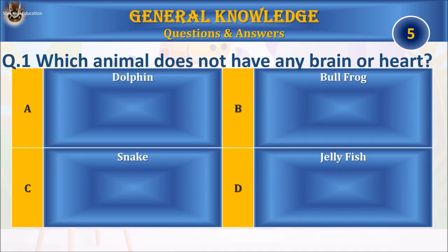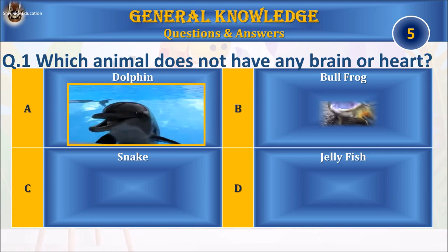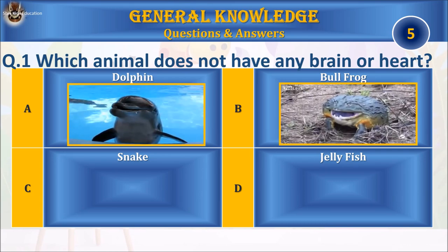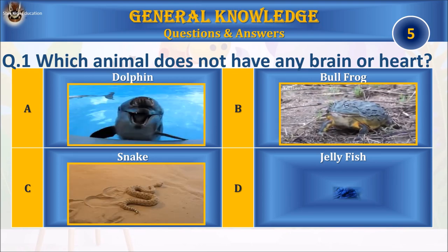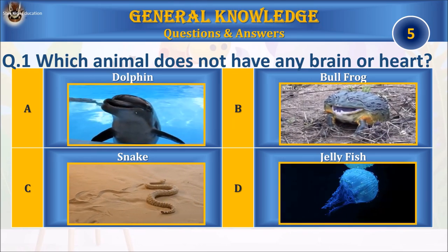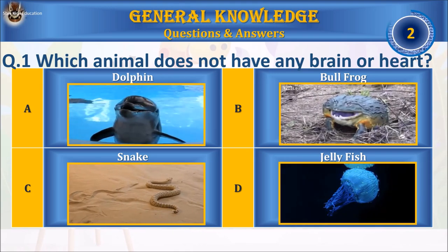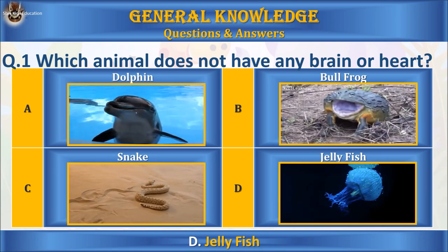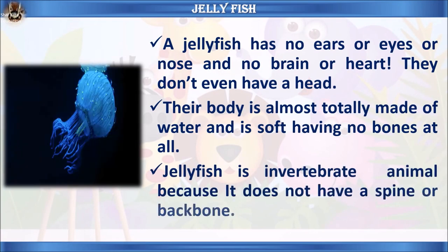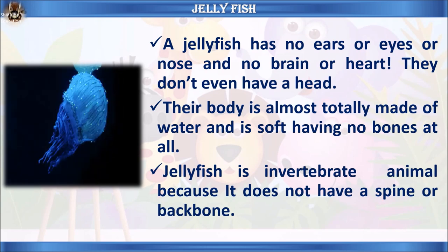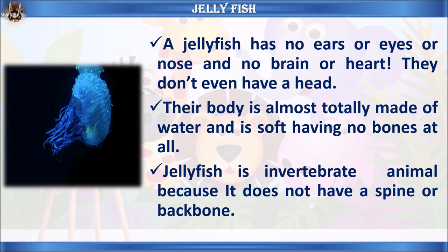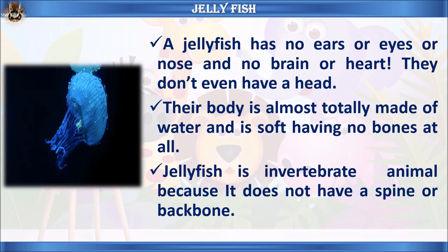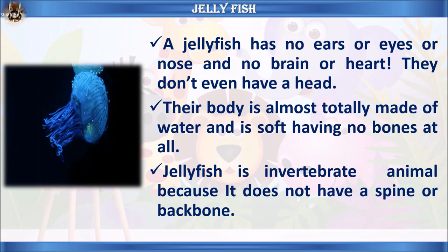Question 1: Which animal does not have any brain or heart? A) Dolphin, B) Bullfrog, C) Sea snake, or D) Jellyfish. Your time starts. The answer is the jellyfish. A jellyfish has no ears, eyes, or nose, and no brain or heart. They don't even have a head. Their body is almost totally made of water and is soft, having no bones at all. Jellyfish is an invertebrate animal because it does not have a spine or backbone.